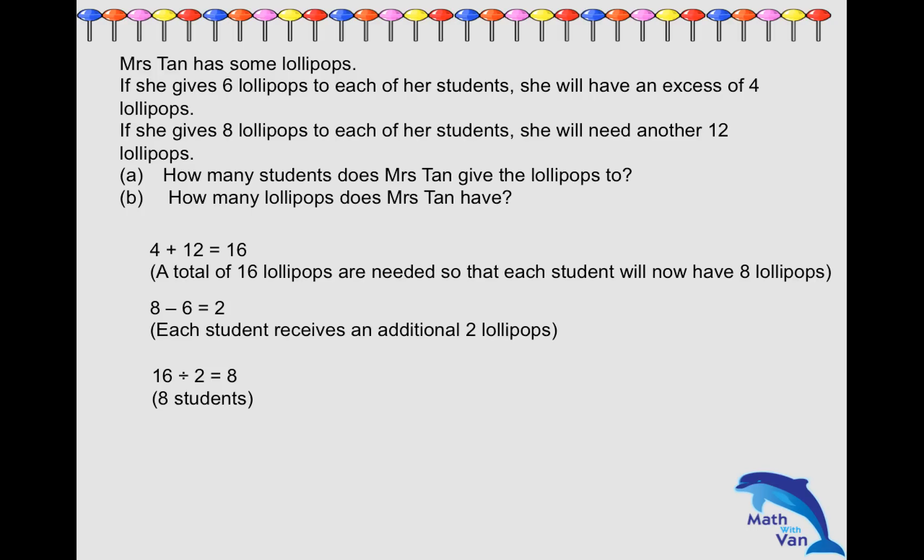Using scenario one: six lollipops each to each student, so total I will need eight times six, which is 48. But we know that in terms of the actual number of lollipops, there is an extra excess of four lollipops, so I have to add back the four, which is 52. So Mrs. Tan has 52 lollipops.